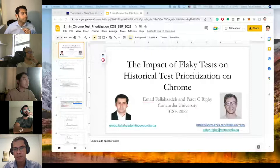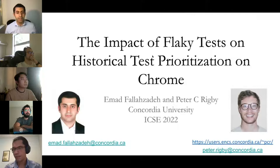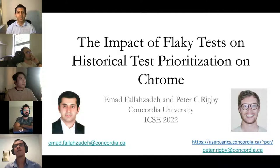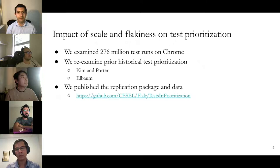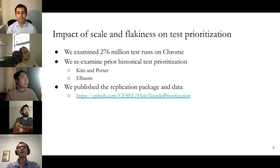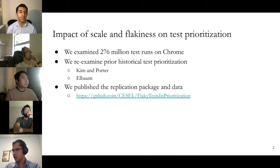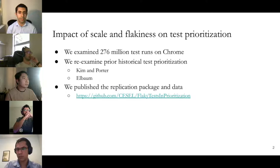This work was done with my supervisor Dr. Ricky. We wanted to understand how test prioritization algorithms perform on large-scale projects in the presence of flakiness. For that purpose, we examined 276 million test runs on Chrome, captured all test results from the Chrome website, and re-examined prior historical test prioritization algorithms like Kim, Porter, and ABLUM. We published the replication package and data — it's one of the rare datasets consisting of test results from a large-scale project with flaky flags.